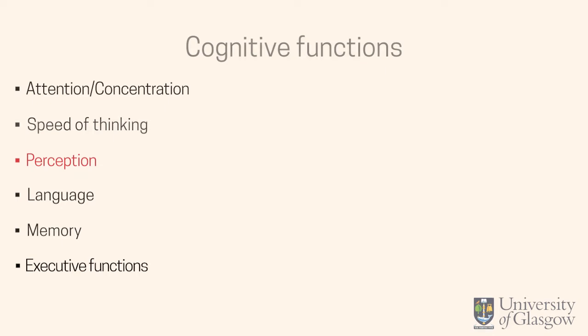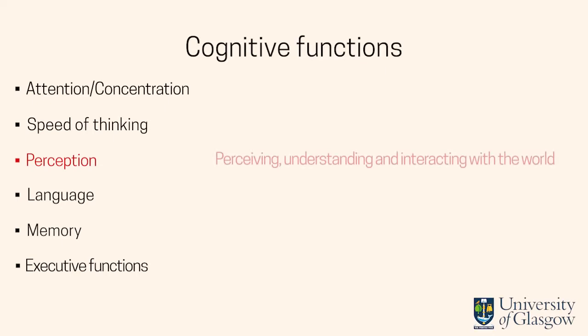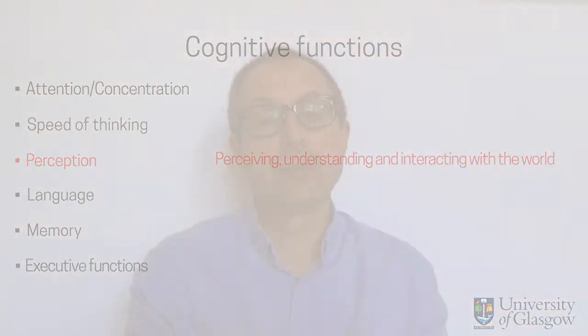The next cognitive function I'm going to talk about is perception — the brain systems that enable us to see, to hear, to perceive the world, and therefore to understand it and allow us to interact with things in the world. If we take visual perception first: